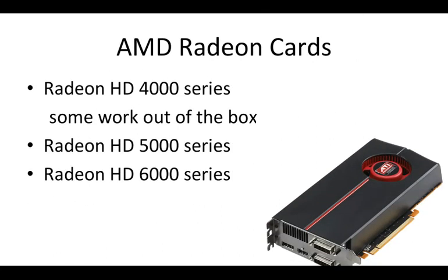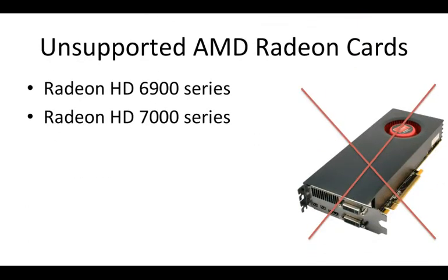Next, the AMD Radeon cards. The Radeon HD4 cards and HD5000 series — some work out of the box but some will require work to get running. The Radeon HD5000 and HD6000 series both work out of the box because Apple ships their Mac computers with these cards, so OS X has great support for them. The unsupported AMD Radeon cards are the 6900 series and 7000 series, so stay away from those — if you have one and no CPU with a built-in GPU, you may want to buy another card.